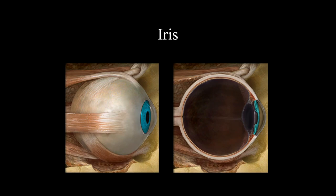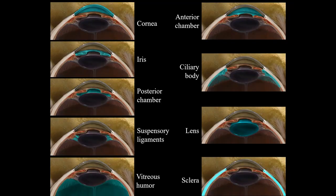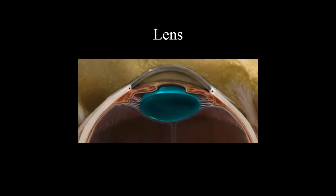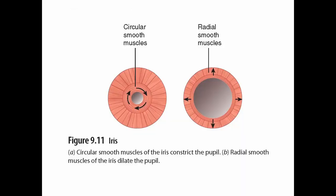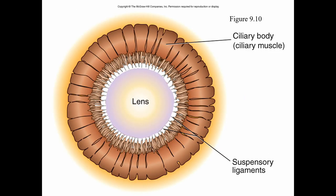The iris is the colored portion of the eye. Circular smooth muscles cause the iris to constrict, letting less light in, while radial muscles cause the iris to dilate, letting more light in. The lens is a flexible biconvex transparent disc held in place by suspensory ligaments attached to the smooth muscles of the ciliary body.